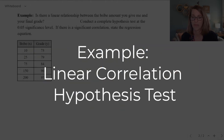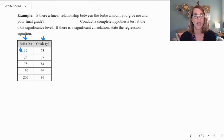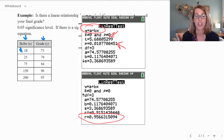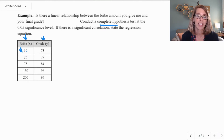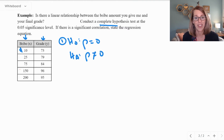Let's take a look at an example. We want to know if there's a linear relationship between the amount of bribe you're giving me — in dollars — and the grade that you get. We're going to conduct a complete hypothesis test. The hypotheses are: the null is rho equals zero, no correlation; the alternative is rho is significantly different than zero, meaning a significant correlation.